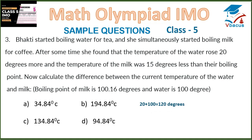So, 20 plus 100 degrees is equal to 120 degrees for water. And 100.16 minus 15 is equal to 85.16 degrees for milk. So, 120 minus 85.16 is 34.84 degrees Celsius, which is in option A.